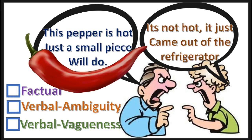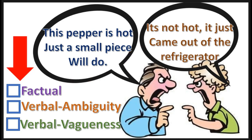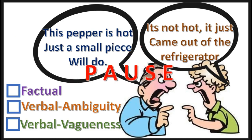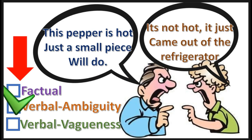Here's another practice problem — select what kind of dispute this is. Press pause, the answer is in three, two, one. That's correct — it's a verbal ambiguity. Hot can mean spicy or high temperature.